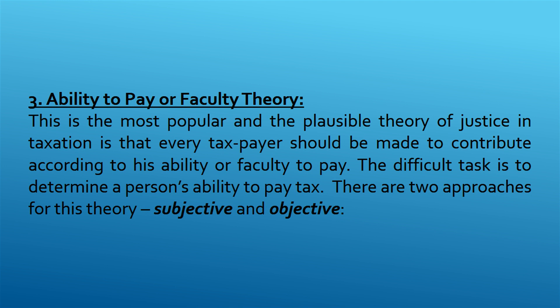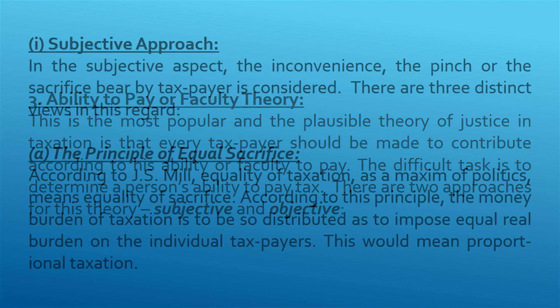Ability to Pay or Faculty Theory. This is the most popular and plausible theory of justice in taxation — that every taxpayer should be made to contribute according to his ability or faculty to pay. The difficult task is to determine a person's ability to pay tax. There are two approaches for this theory: subjective and objective.